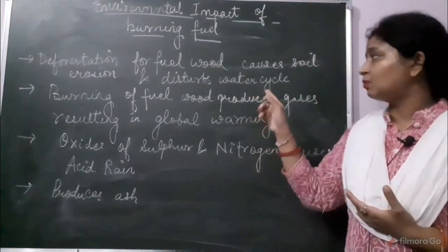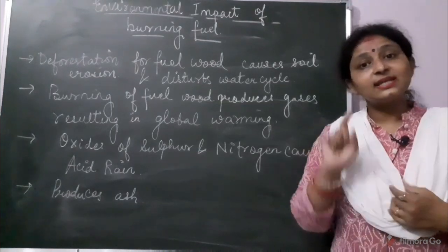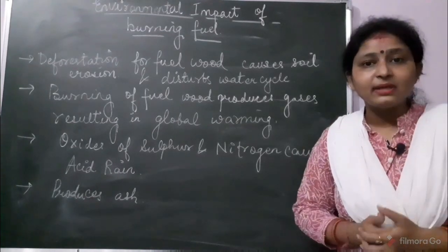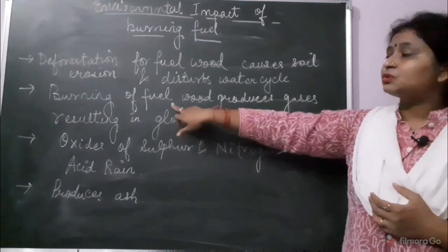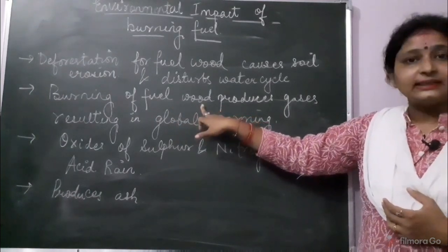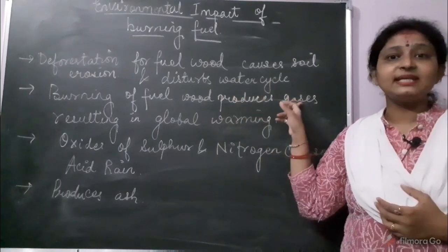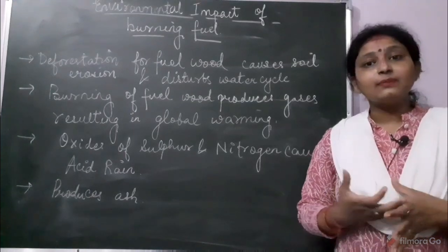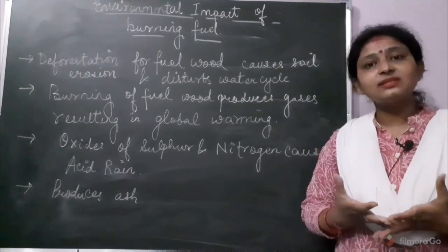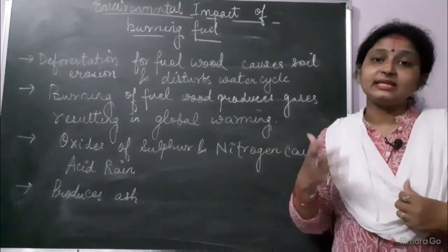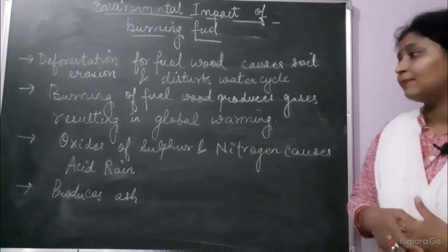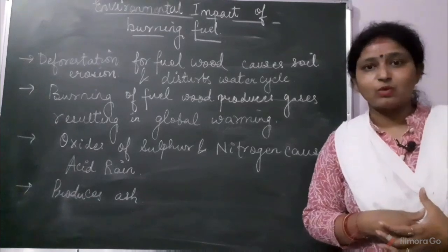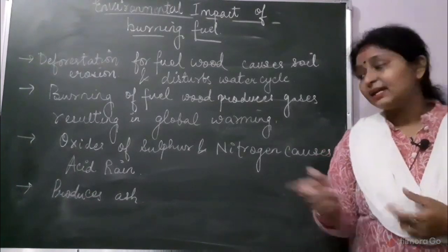So if we cut the trees, what will happen to the water cycle? It will be disturbed. Also, carbon dioxide is a greenhouse gas, so cutting trees increases CO₂ levels, leading to global warming — an increase in the heating of the Earth's surface. Furthermore, burning fuel releases sulfur and nitrogen oxides into the atmosphere.